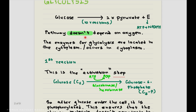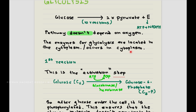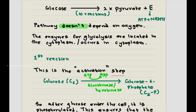This pathway doesn't depend on oxygen — that is actually an important point to remember. Glycolysis mainly occurs in the cytoplasm, because all the enzymes needed for glycolysis are located in the cytoplasm.